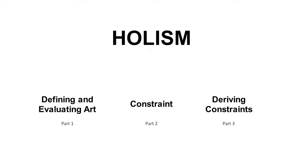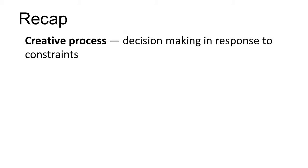This is the final video in a short series on creative process in art. If you haven't seen the previous videos, there are links to them down below, but just for the sake of it, I'm going to launch into a brief recap here. When I talk about the creative process, what I'm referring to is a process of decision-making in response to constraint, with the goal of creating something new.